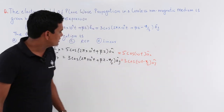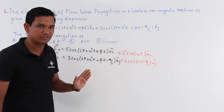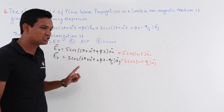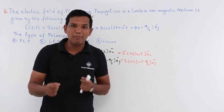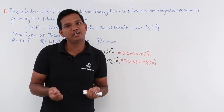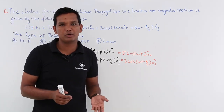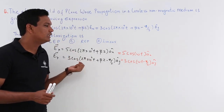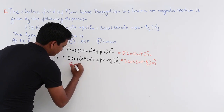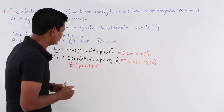If we observe, the phase difference between these 2 components is π/2, which is 90 degrees. The amplitudes are 5 and 3. We know that when the amplitudes of the 2 components are not equal and the phase difference is 90 degrees, it is the case of elliptical polarization. If both amplitudes were 5, it would be circular polarization. But since the amplitudes are not equal, it is an elliptical polarization.